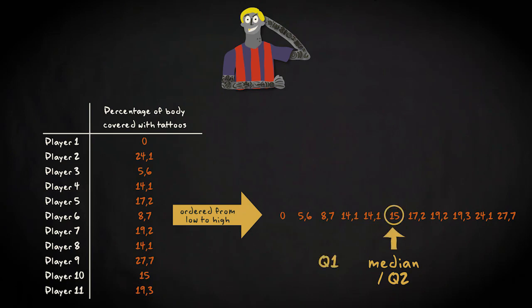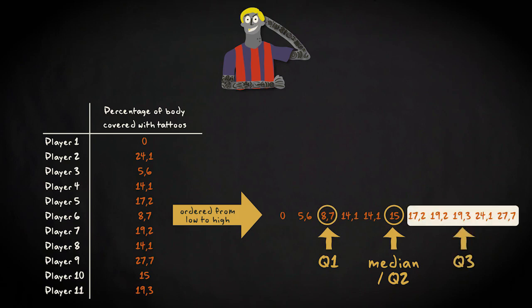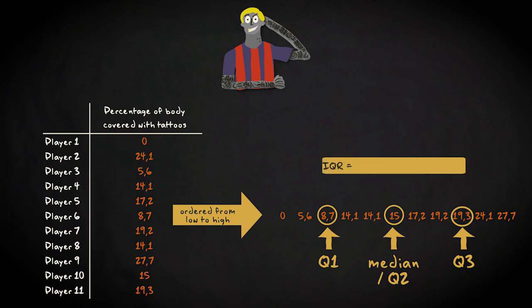You find Q1 by looking for the middle value of the values on the left side of the median. That's here, 8.7. You find Q3 by following the same strategy on the right side of the median. That's 19.3. Now, the interquartile range is Q3 minus Q1 equals 19.3 minus 8.7 equals 10.6.